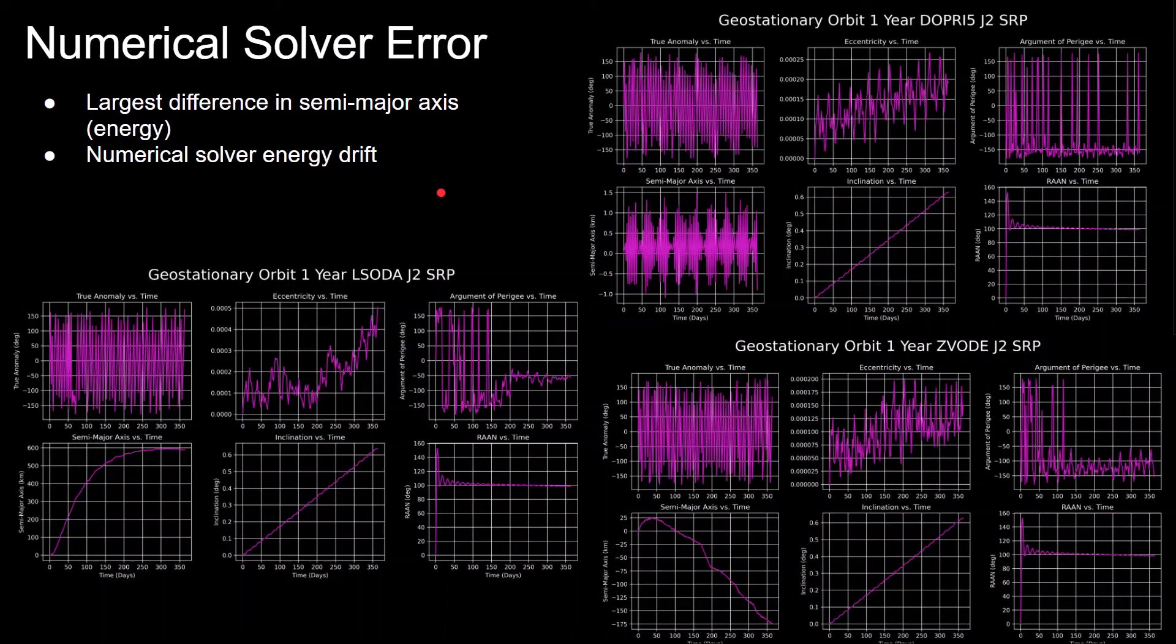The Keplerian orbital element plot I showed before was made using a Runge-Kutta 4-5 method to solve the ordinary differential equations of motion, which is the plot on the top right here. But numerical solvers aren't perfect, and they can actually come up with very different answers, which matters when talking about small orbital perturbations, like in the case here of geostationary orbits.